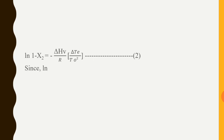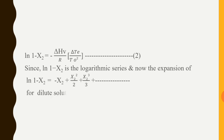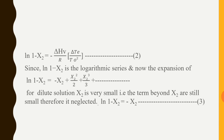Now, ln(1 − X2) can be expanded as a logarithmic series: ln(1 − X2) = −X2 − X2²/2 − X2³/3 − ···. For a dilute solution, X2 is very small, so terms beyond X2 are negligibly small and are neglected. Therefore, ln(1 − X2) ≈ −X2.